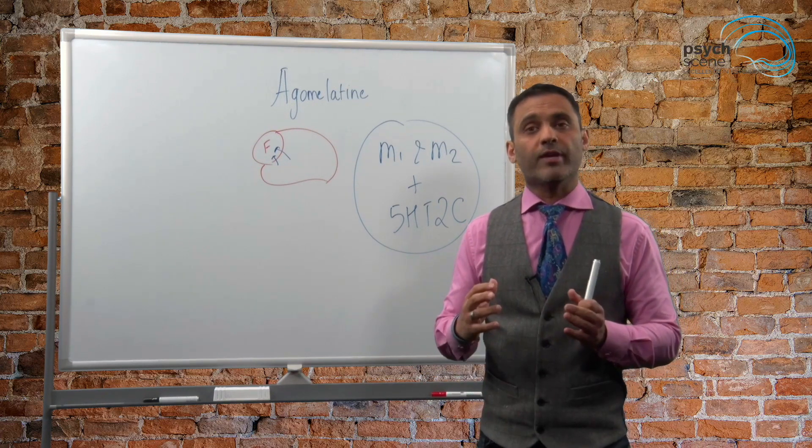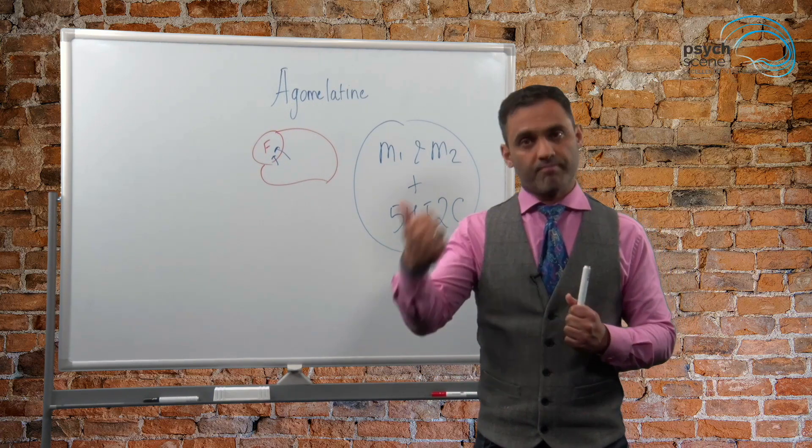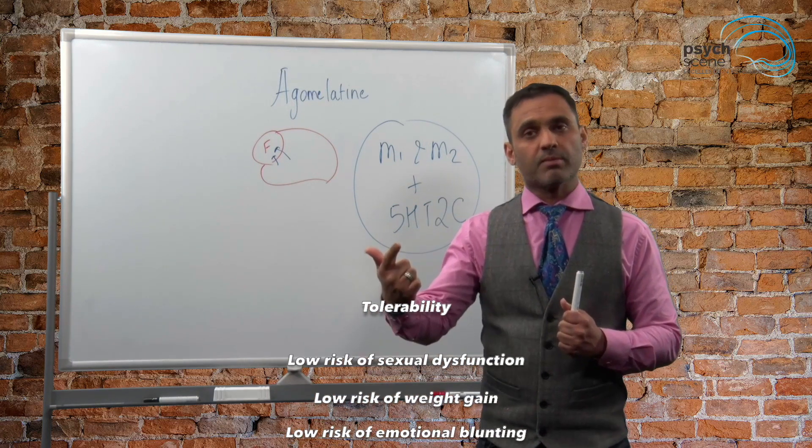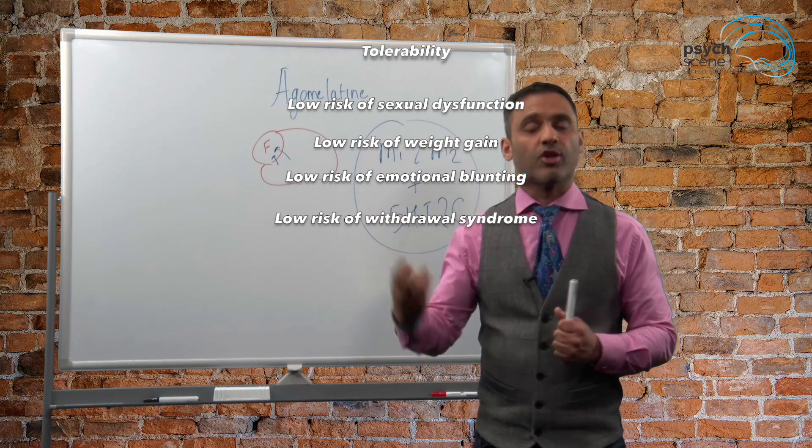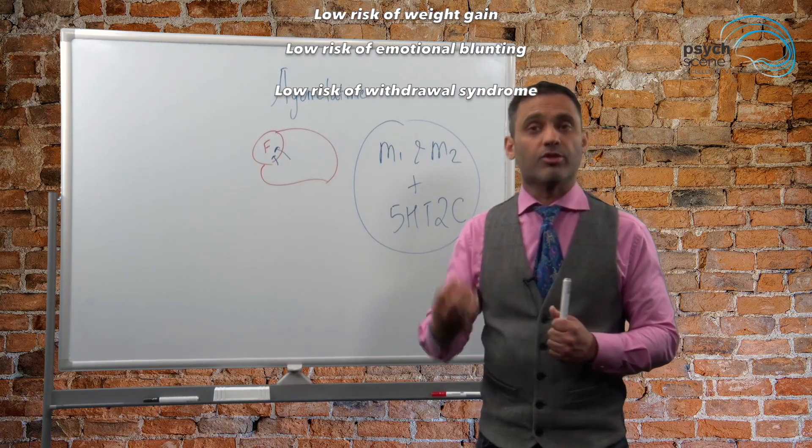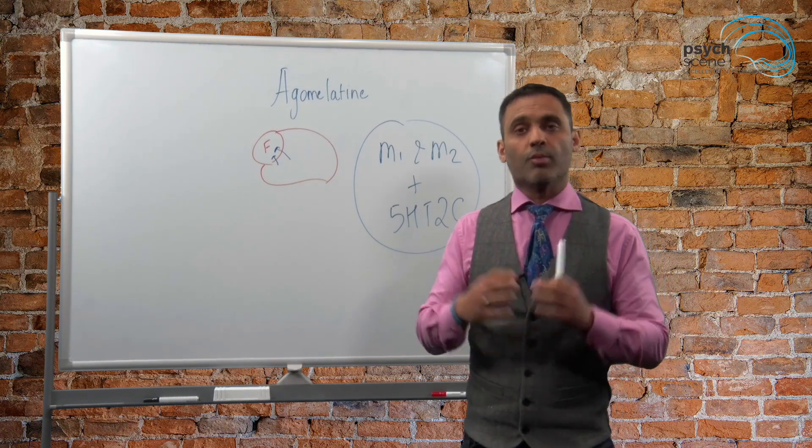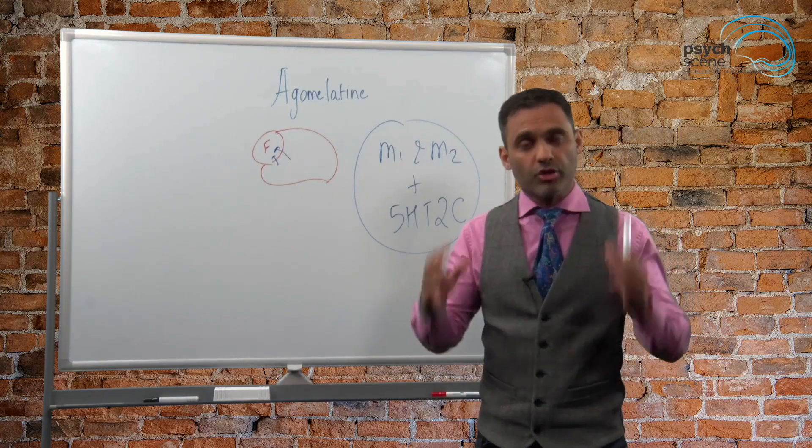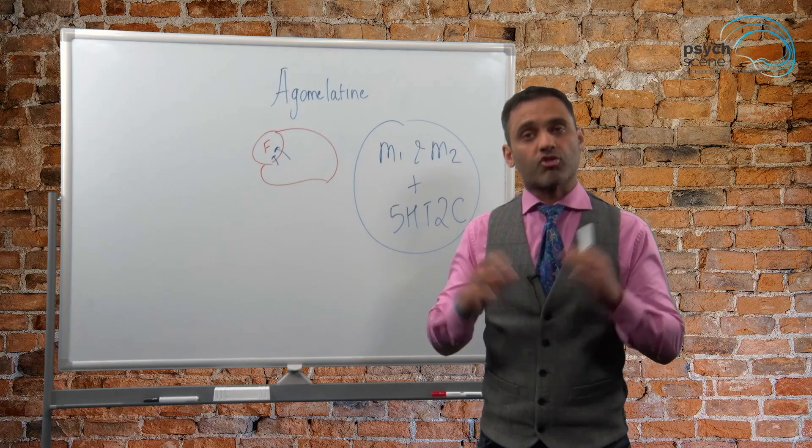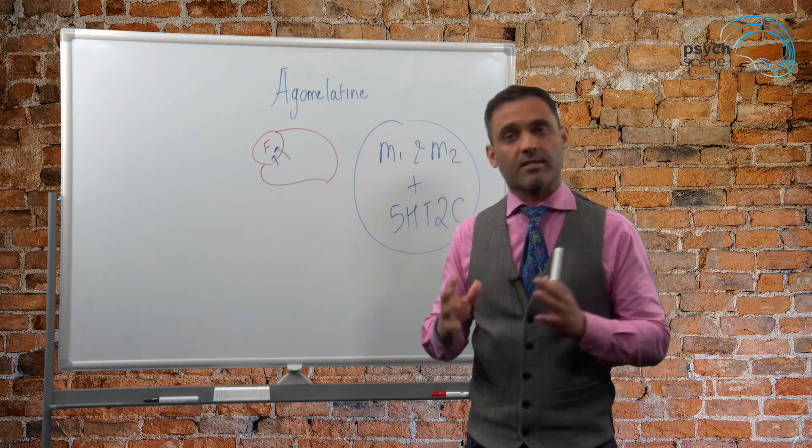And in terms of its tolerability profile: sexual dysfunction minimized, withdrawal symptoms minimized, no weight gain, emotional blunting is not a side effect. It can in fact be used to treat it. So I hope that this gives you an idea about the novel antidepressant agomelotine that is a useful agent in treatment of depression and anxiety.